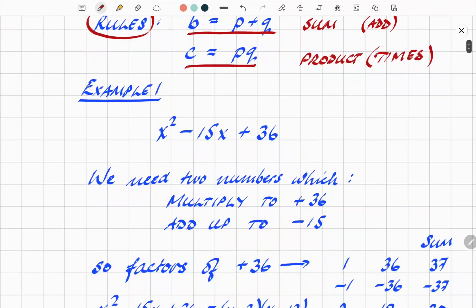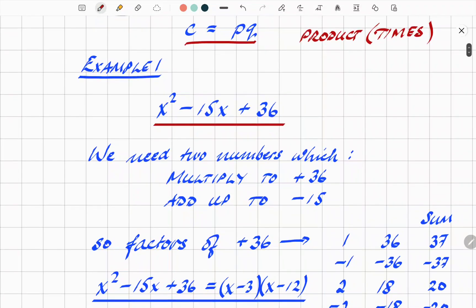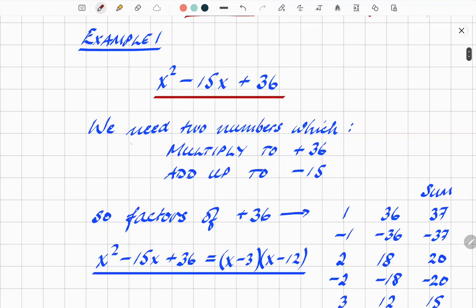So let's take an example just to illustrate the point. So I've got x² - 15x + 36. And we are going to find two numbers which multiply to +36 and add up to -15. The really important thing here is watch the sign. You need those signs. It's not just 15 and 36. The sign is very important. You can't afford to leave that out.